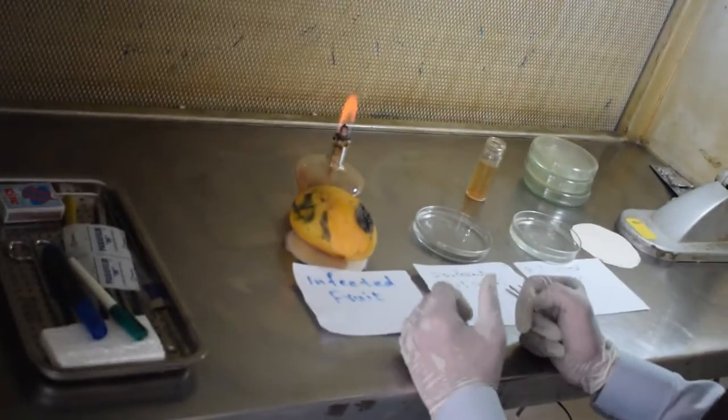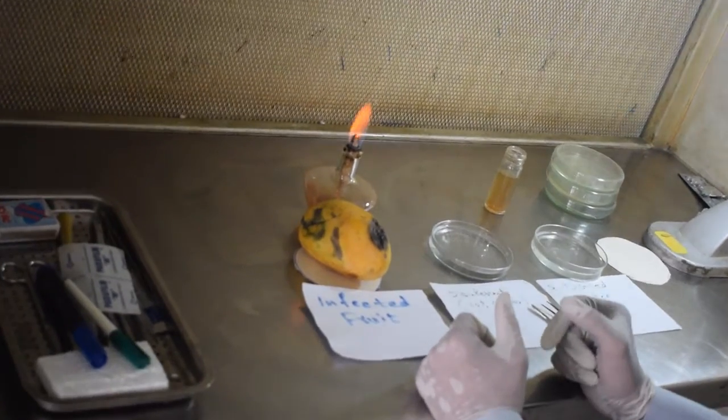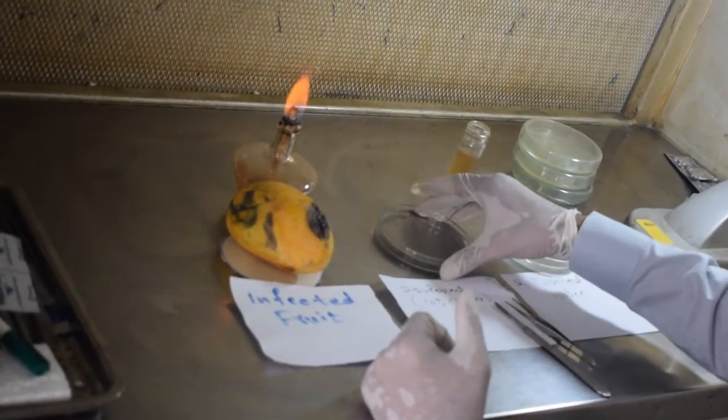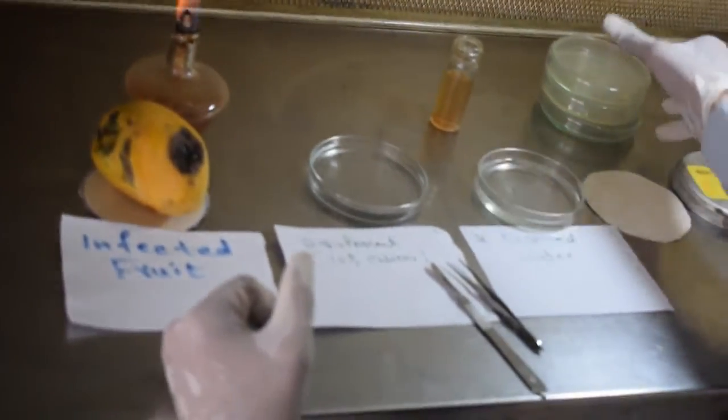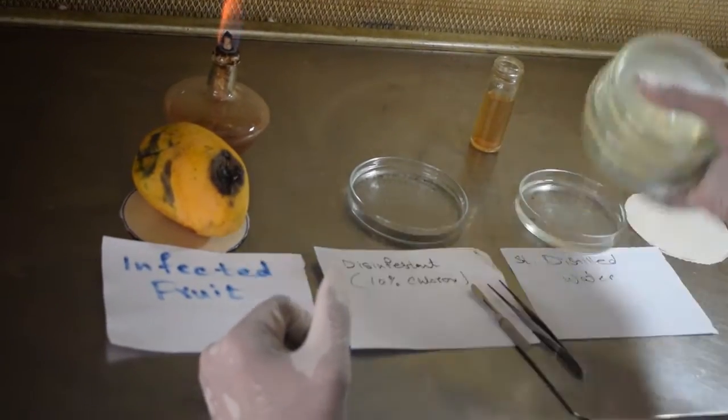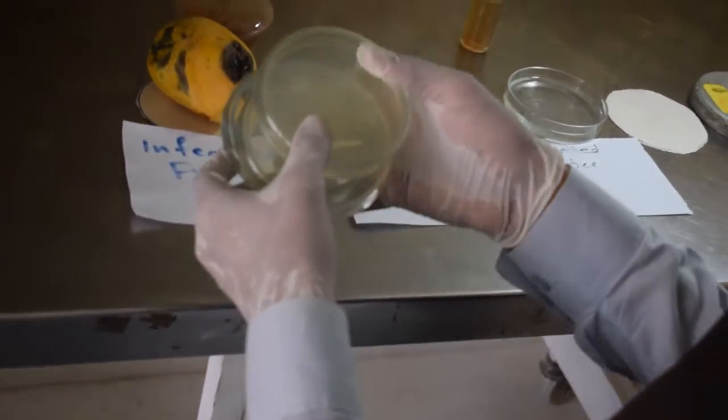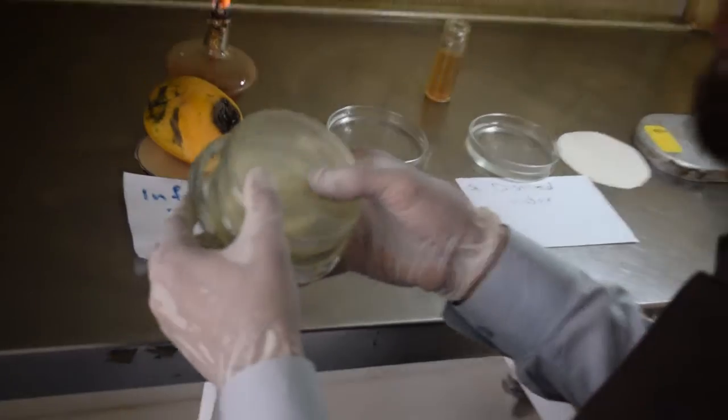We need the burning spirit lamp, the disinfectant Clorox 10% and distilled water, the blotter paper, and last but not least, the petri dish filled with the medium.